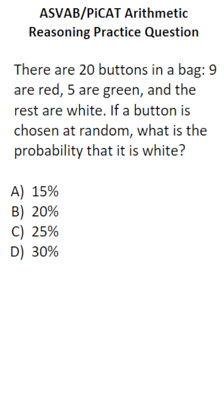This arithmetic reasoning practice test question for the ASVAB and PyCat says: there are 20 buttons in a bag, 9 are red, 5 are green, and the rest are white. If a button is chosen at random, what is the probability that it is white?